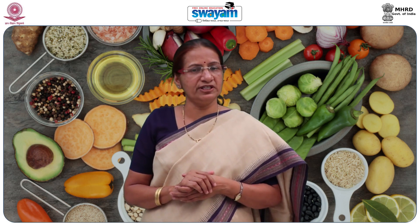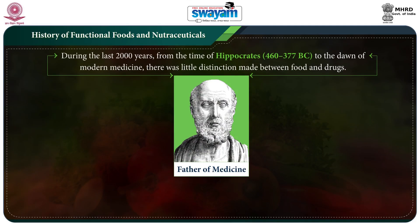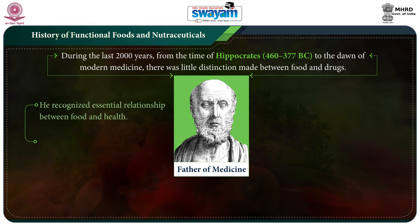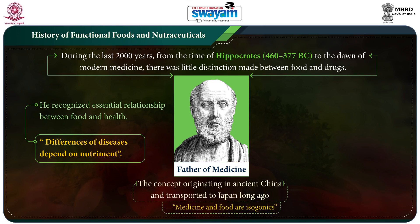Dear learners, in this module we shall study the history of functional foods and nutraceuticals. During the last 2,000 years, from the time of Hippocrates — that is from 460 to 377 BC — to the beginning of modern medicine, there was little distinction made between food and drugs. Hippocrates, the father of medicine, clearly recognized the essential relationship between food and health and emphasized that differences of diseases depend on nutriment. The concept that medicine and food are isogonics originated in ancient China and was transported to Japan long ago.